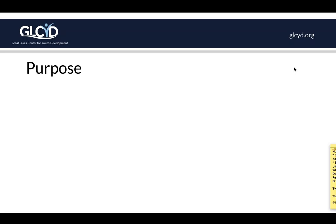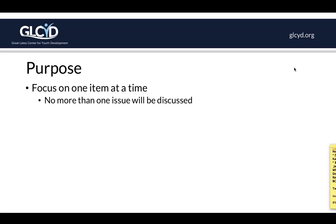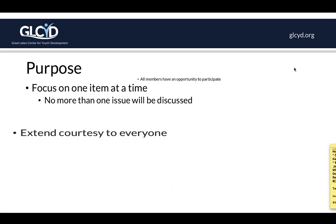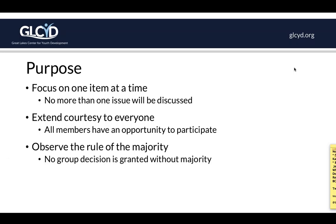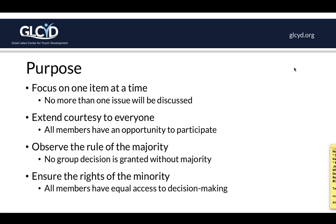So what's the purpose for Robert's Rules of Order? One purpose is to be able to focus on one thing at a time, to not have more than one issue at a time be discussed, and to not have more than one person at a time speak. You want to extend courtesy to everyone and ensure all members are equal, all members have a chance to participate. You observe the rule of the majority — no group decision is granted without at least a majority voting — and you also ensure the rights of the minority so that all members have equal access to decision-making and all members feel like their voice has been heard.